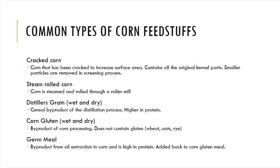Corn gluten is also available in wet and dry. It is a byproduct of corn processing. It does not include gluten though. Gluten comes from wheat, oats, and rye, so that is a colloquial term that has just been derived into corn itself. And then lastly, we have germ meal. Germ meal is a byproduct of oil extraction in corn and is very high in protein. The germ is the only living part of the seed kernel where this comes from. Germ meal is always added back to the corn gluten meal on a normal basis.